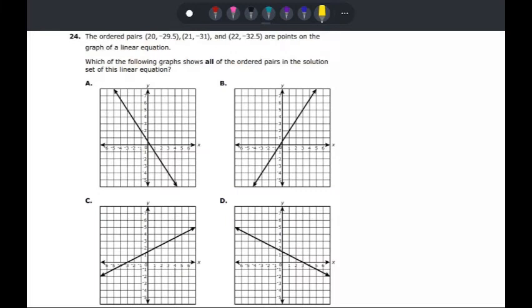Welcome to an Algebra 1 sample question. This is number 24. It says that we have some ordered pairs and they are points on a graph of a linear equation. They want to know which of the following graphs shows all the ordered pairs in the solution set of this linear equation.